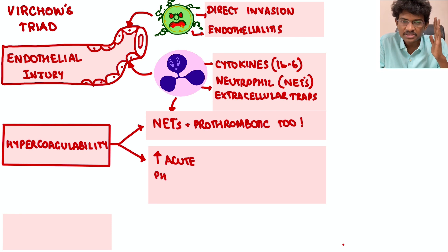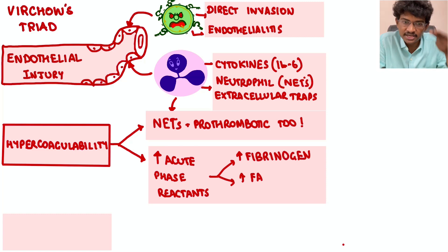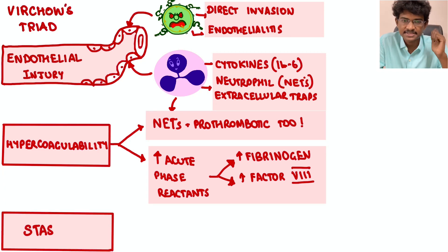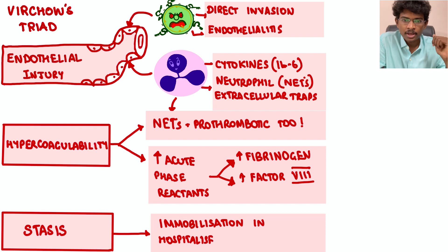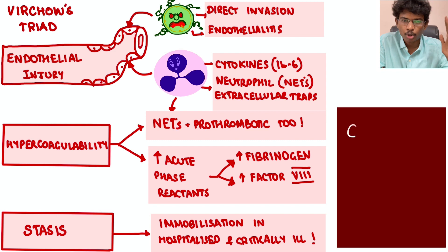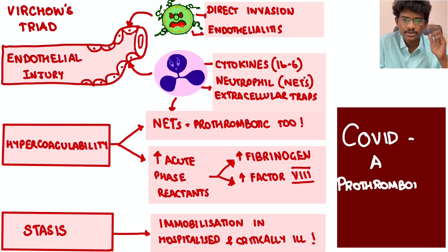Next is hypercoagulability from increased acute phase reactants like fibrinogen and factor 8 — coagulation factors which, when elevated, contribute to thrombosis. Next is stasis: when severe inflammation slows blood flow, or when the patient is immobile like moderate-to-severe COVID patients who are bedridden, immobilization causes stasis and thrombosis. All these factors contribute to thrombosis in COVID-19.